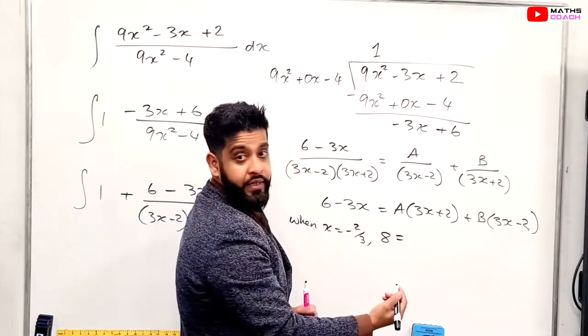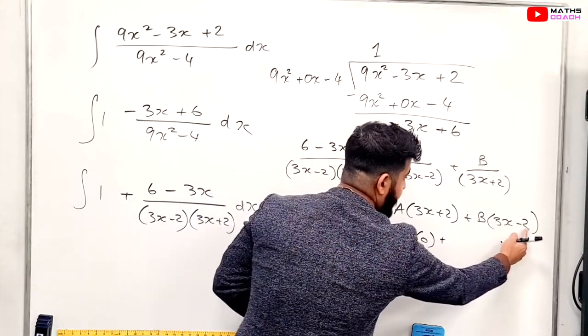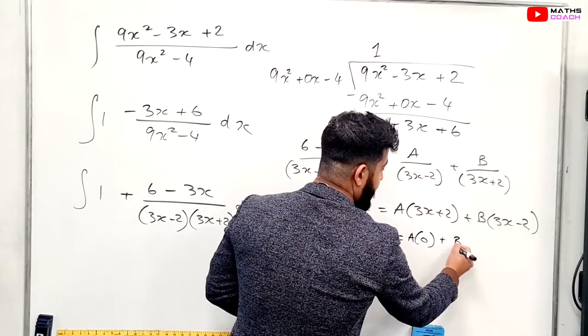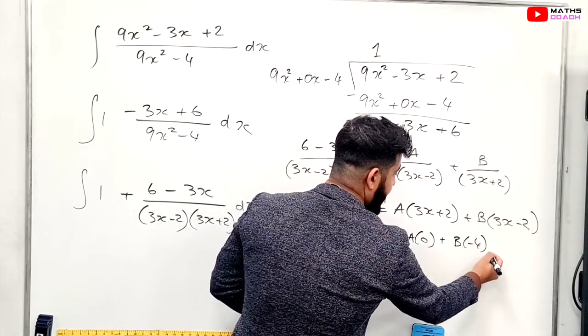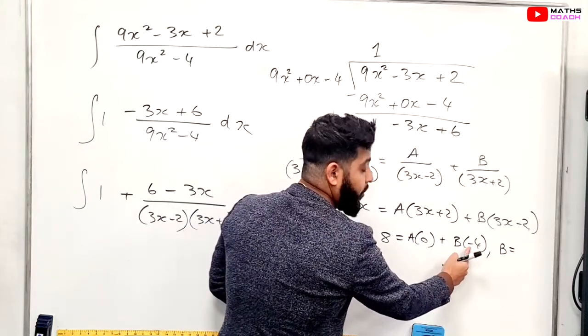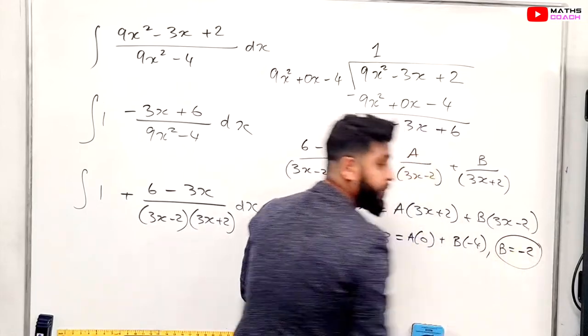And then a is 0, right? So a is 0. And then what do I get for here, please? Minus 4. So b minus 4. So therefore, b would be equal to 8 divided by minus 4. So 8 divided by minus 4 is minus 2. Is that good?